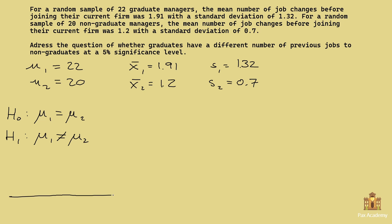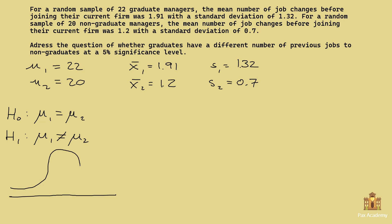Is this going to be a one-tail test or a two-tail test? This is indeed a two-tail test, because the alternative hypothesis says it's different but we don't know if it's higher or lower — it could be either. The significance level is 5%, but because this is a two-tail test with two rejection regions, the 5% is split into two: 2.5%, or 0.025, on the right-hand side and on the left-hand side, leaving an acceptance region of 95%.